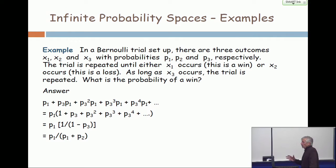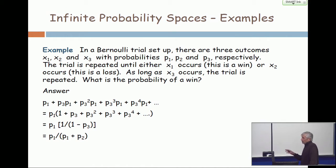You have a Bernoulli trial set up, but now you have more than two outcomes. So originally we talked about success and failure, but you can have success, failure, and neither. So you have three outcomes, X₁, X₂, and X₃, with probabilities respectively, P₁, P₂, and P₃. So the sum of those three is one.